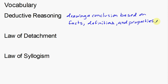So these would be examples of: if you knew a certain law, if you knew a certain definition or a property, you're able to draw a conclusion based on one of those definitions or properties. You're able to make a conclusion based on that.